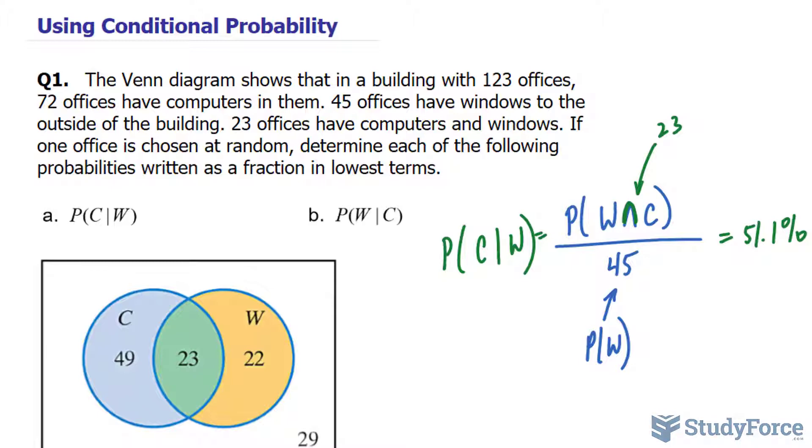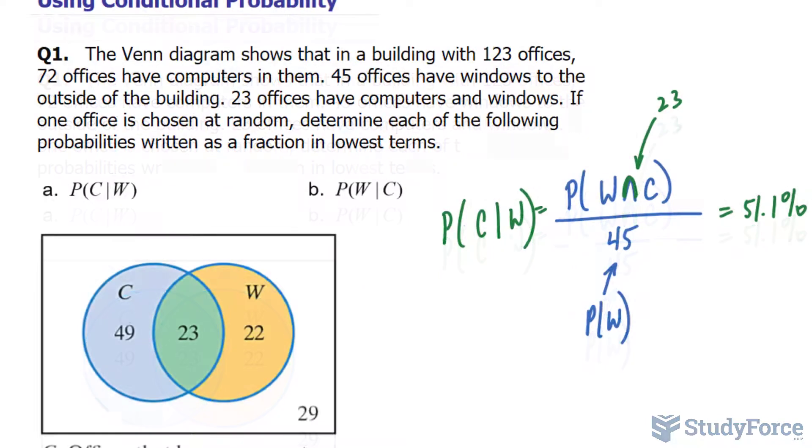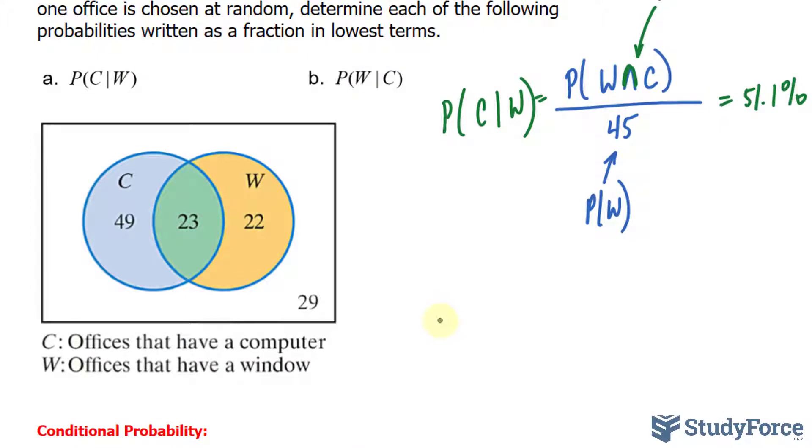Moving on to part B, the probability of selecting an office with a window given that you selected one with a computer. There are 72 offices that have a computer in them. So the probability of W given C uses the probability of C, which is 72.